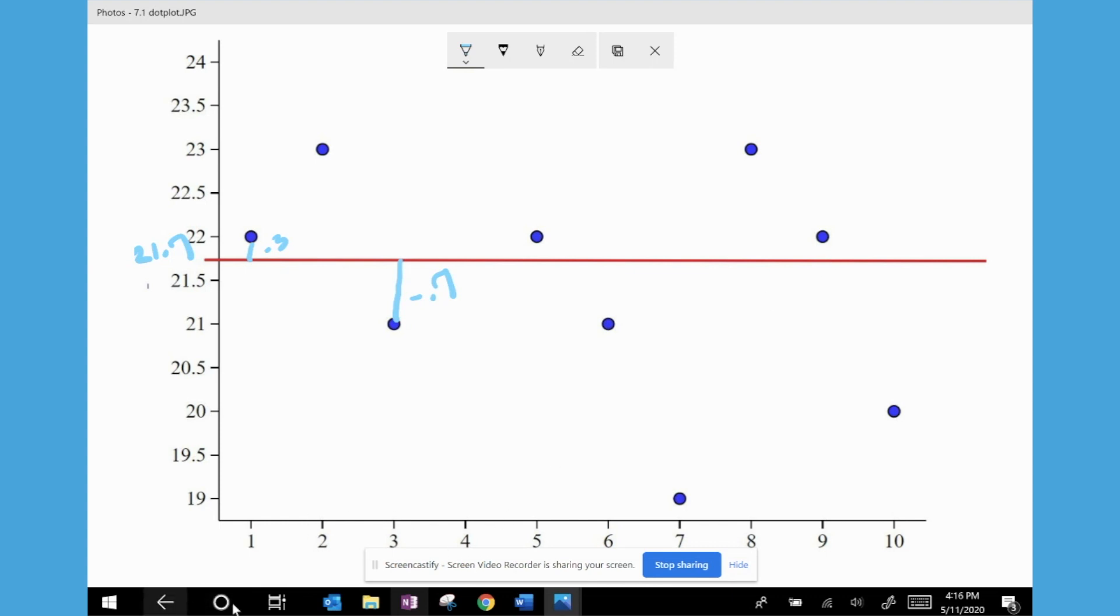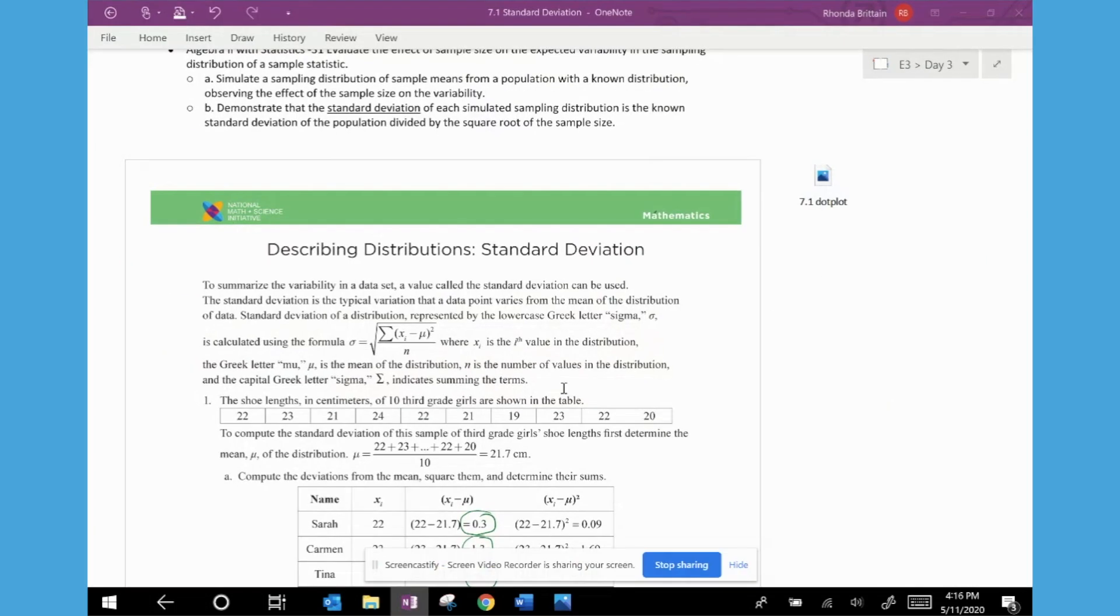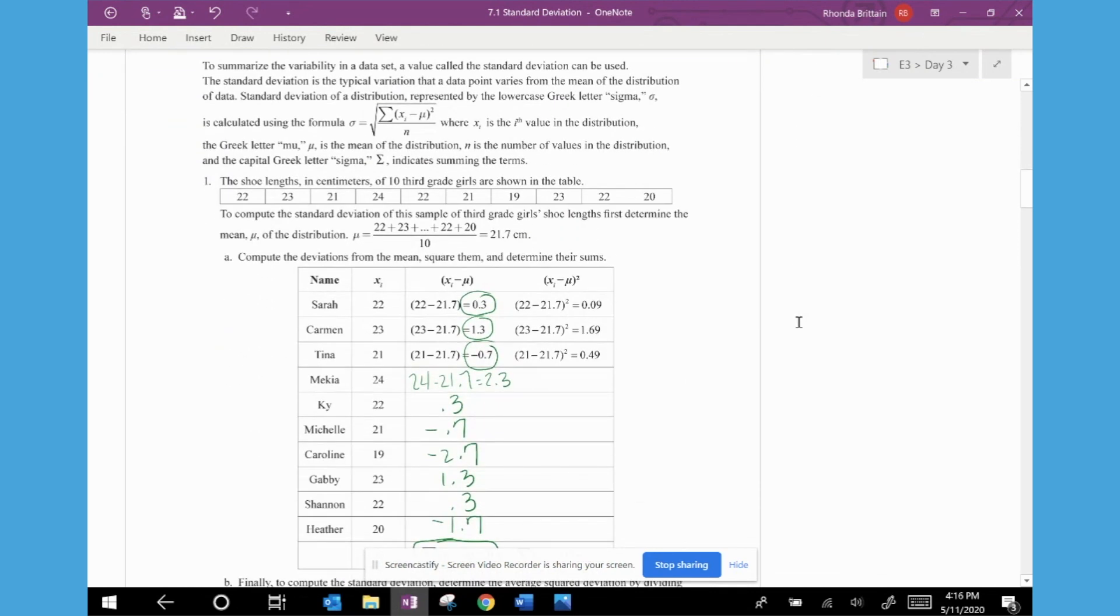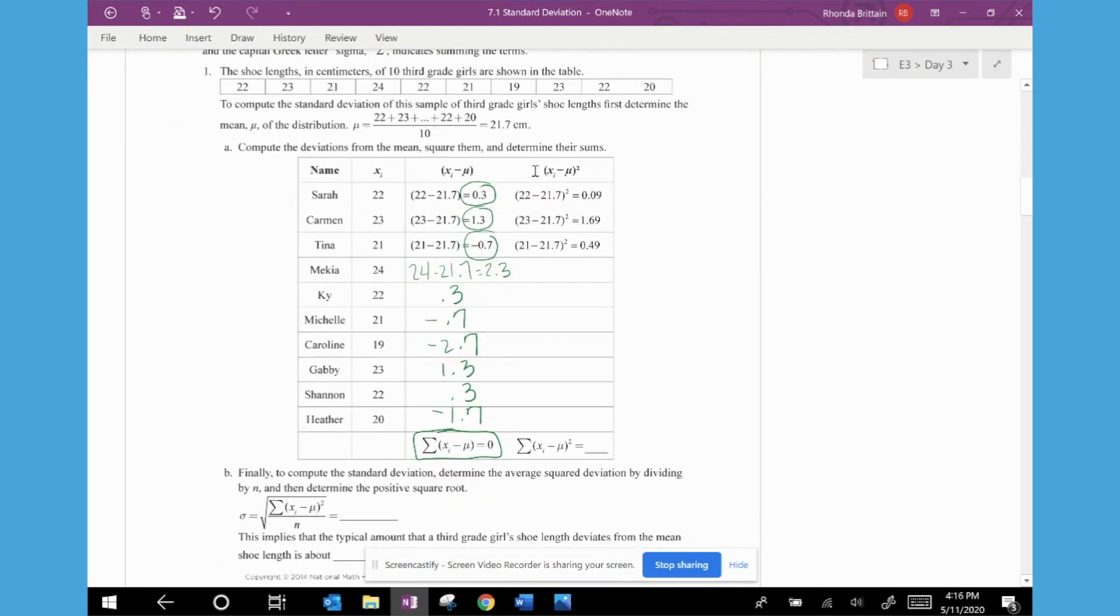So if we go back to the lesson, we're going to look at the third column. And so this would be the squared deviation from the mean. So I need to take all of the deviations and square them. So the first three are done. So 0.3 squared is 0.09, 1.3 squared is 1.69 and so on.